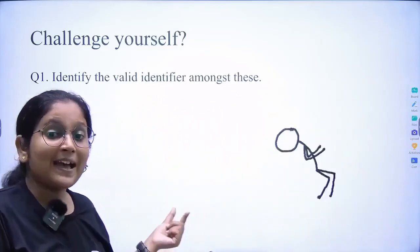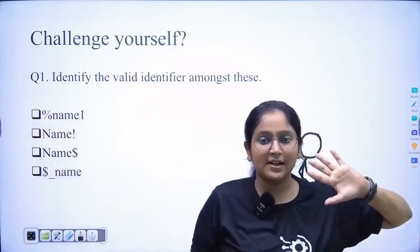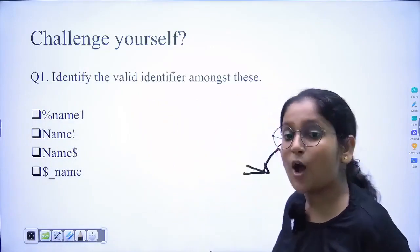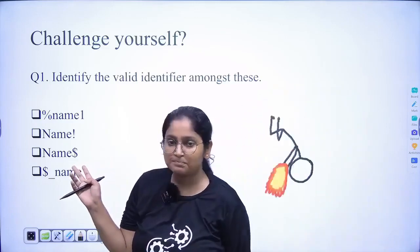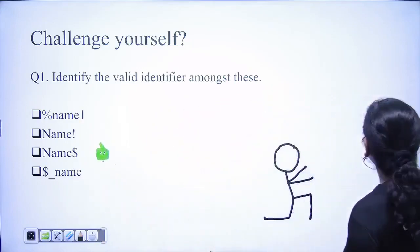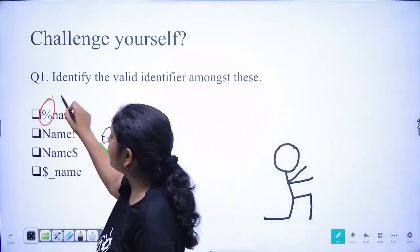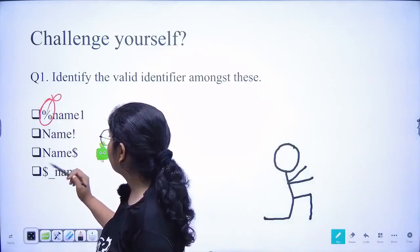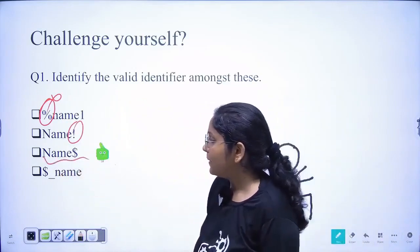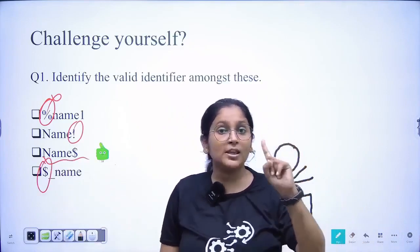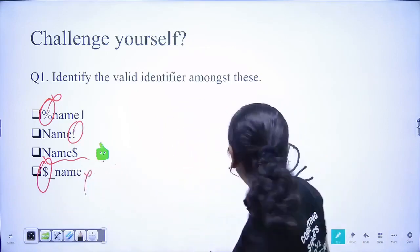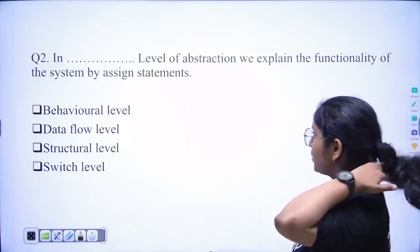Identify the valid identifiers amongst these. We have studied identifiers and discussed them in today's lecture — what are identifiers and how we use them. The answer: percentages are not allowed, extra symbols cannot be used, only dollar is allowed as a special symbol. Dollar cannot be used in the first place — we can only use either underscore or an alphabet at the start. So that option is also wrong, and this one is correct.